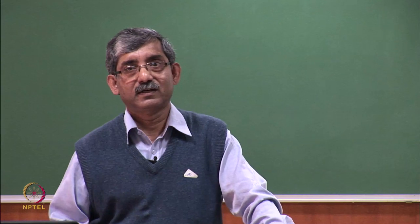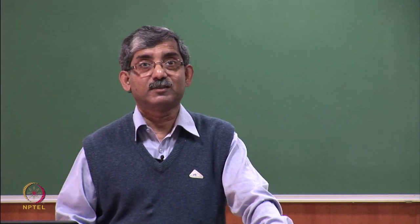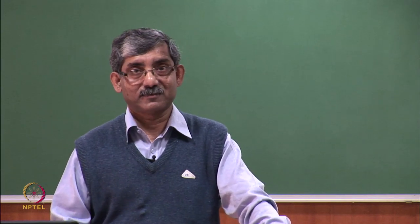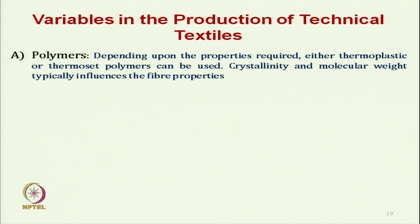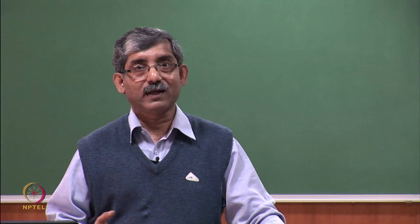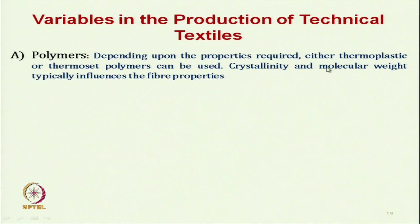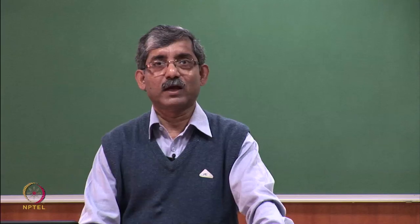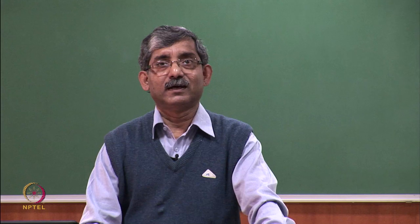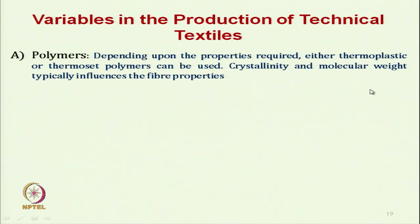Now let us understand the variables in the production of technical textiles. The first variable is the selection of polymer. We cannot use polymers randomly — depending on the type of application and the type of functional requirement, we have to select the polymer. Whether we need thermoplastic or thermoset polymer depends on the area of application. Crystallinity and molecular weight typically influence the fibre property, so we have to select accordingly.